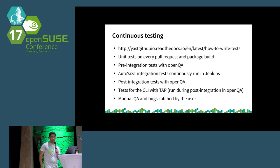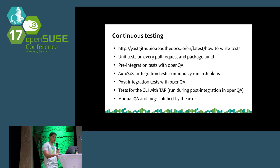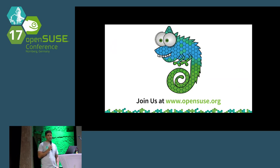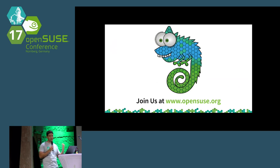That's mainly all I wanted to say. I had more slides about how we use the same system not only for Tumbleweed but also for fixed releases like Leap and also for maintenance releases — when a version is already out but a critical bug appears, you also have to deliver a maintenance update and fix the bug in all supported versions. For that we also use a very similar mechanism with Travis and Jenkins and so on, but it was too much for 15 minutes. I'm now open to questions, and you can approach me at any point in the conference.